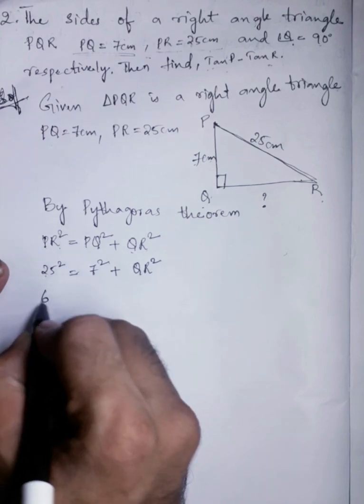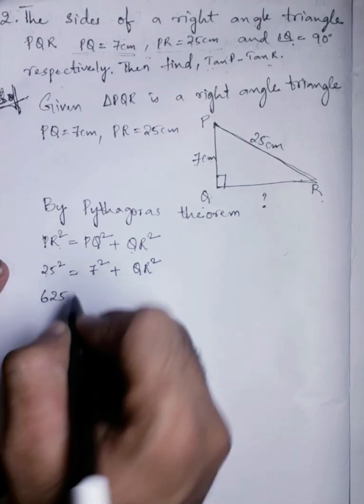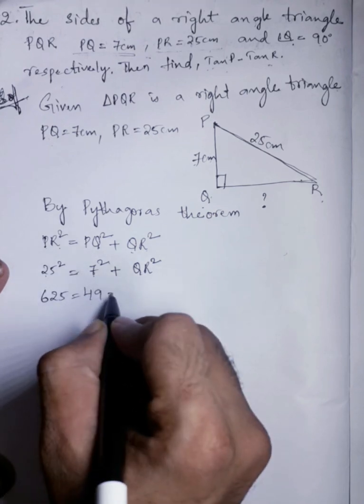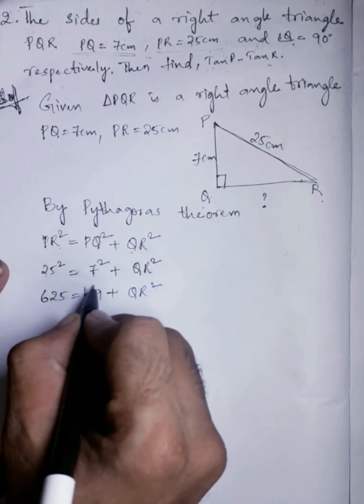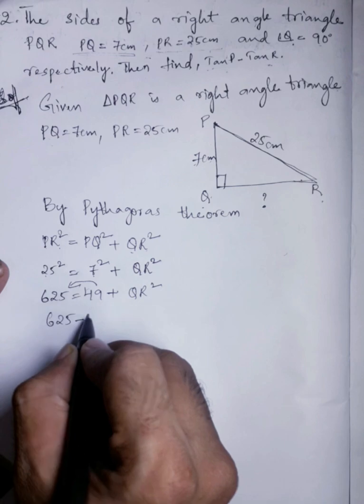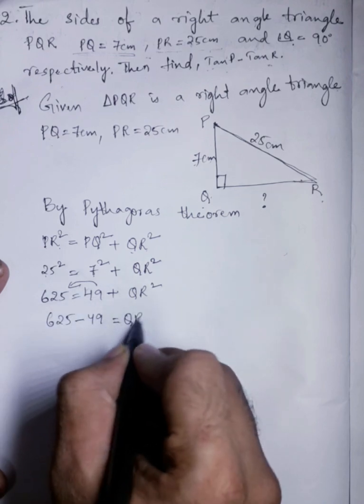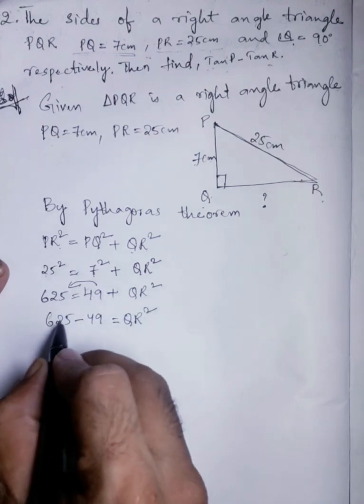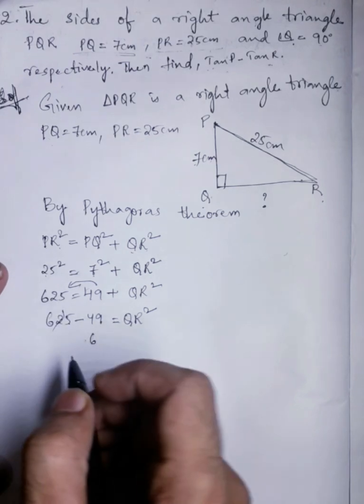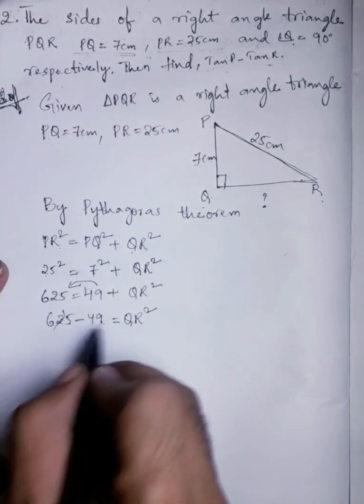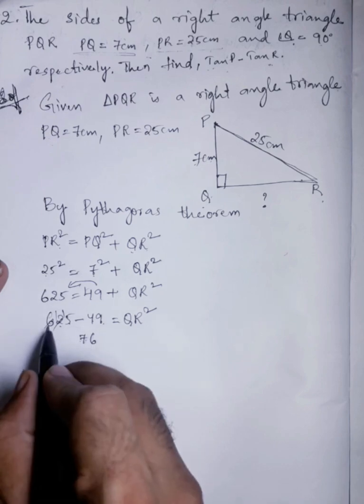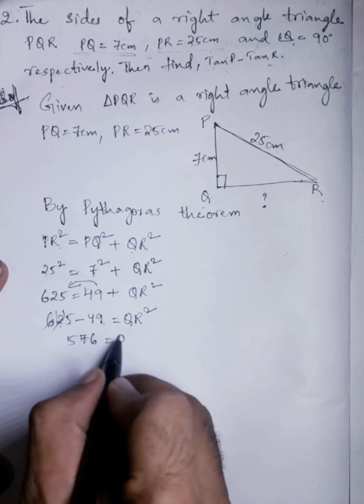25 square is 625, 7 square is 49 plus QR square. So 49 goes to that side, it will become 625 minus 49 equals QR square. 625 minus 49 is 576 equals QR square.